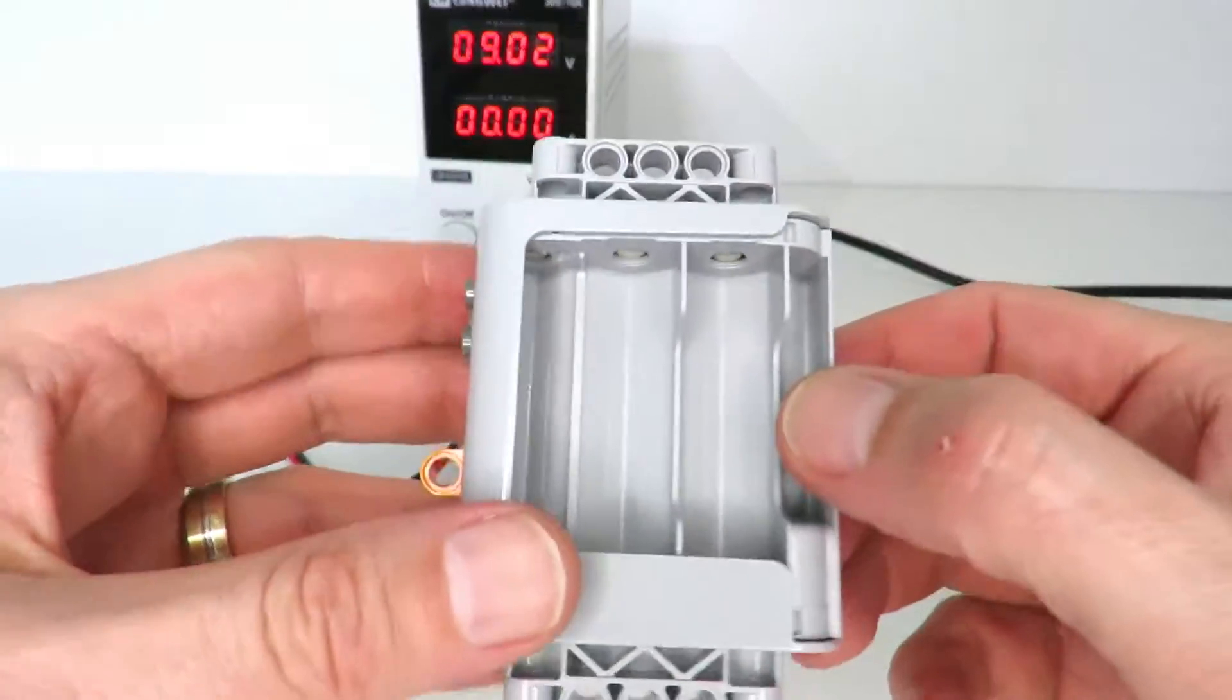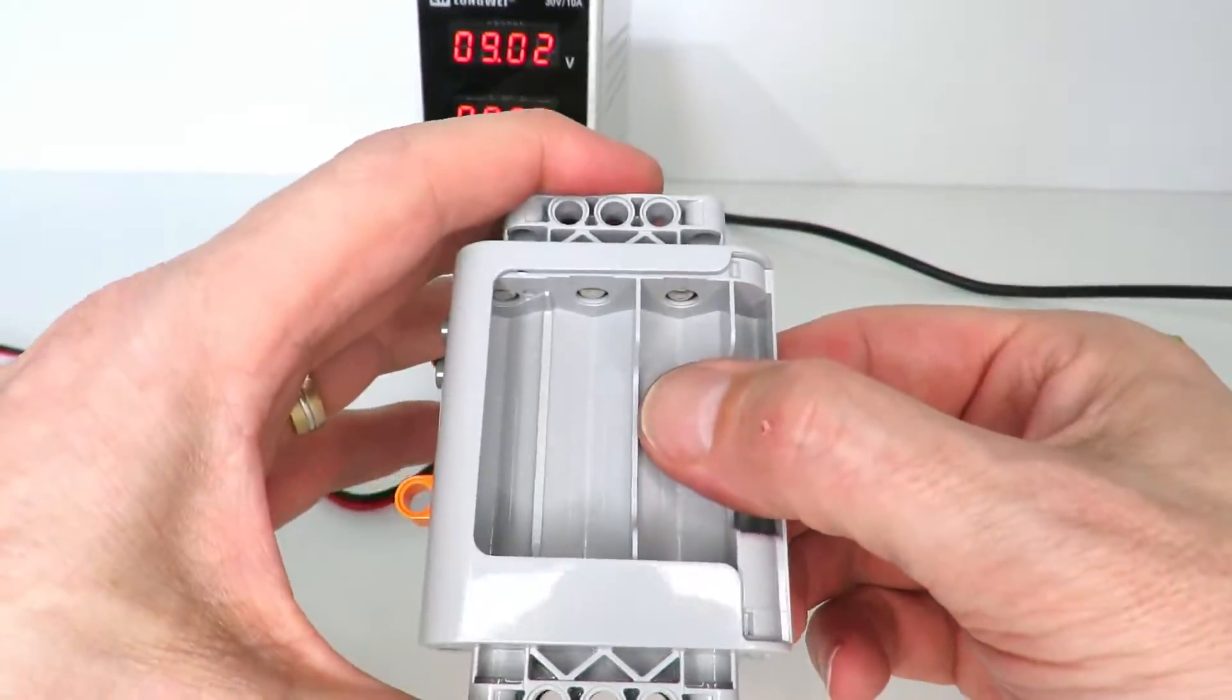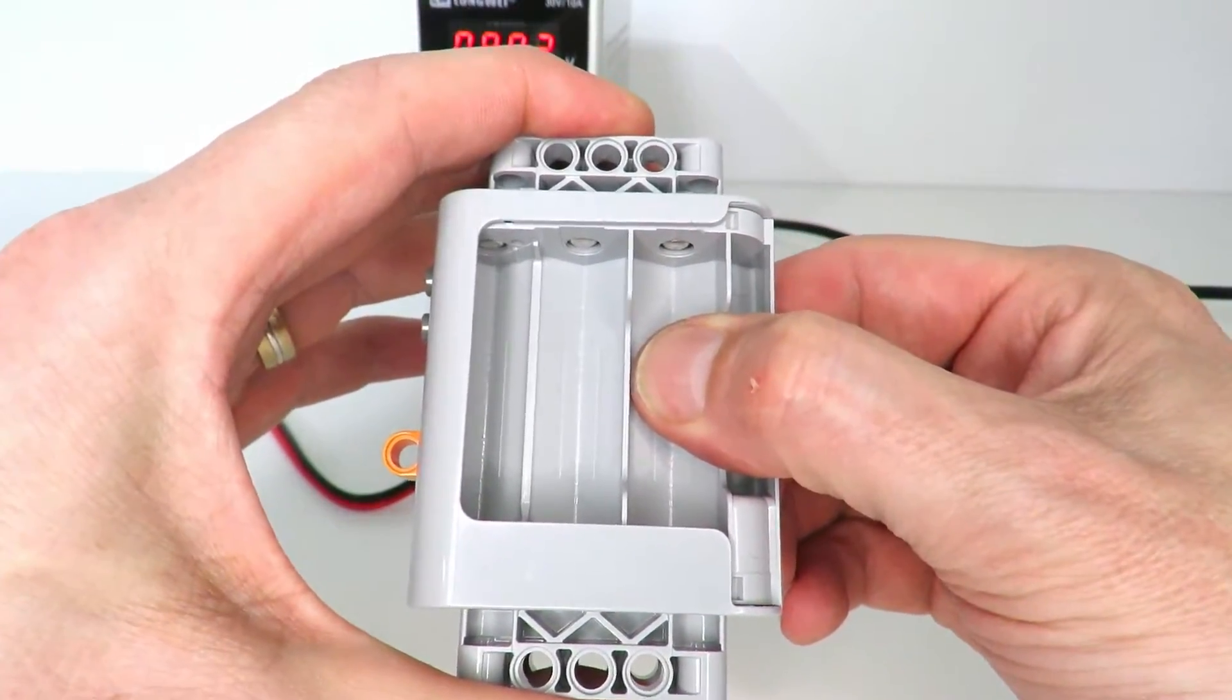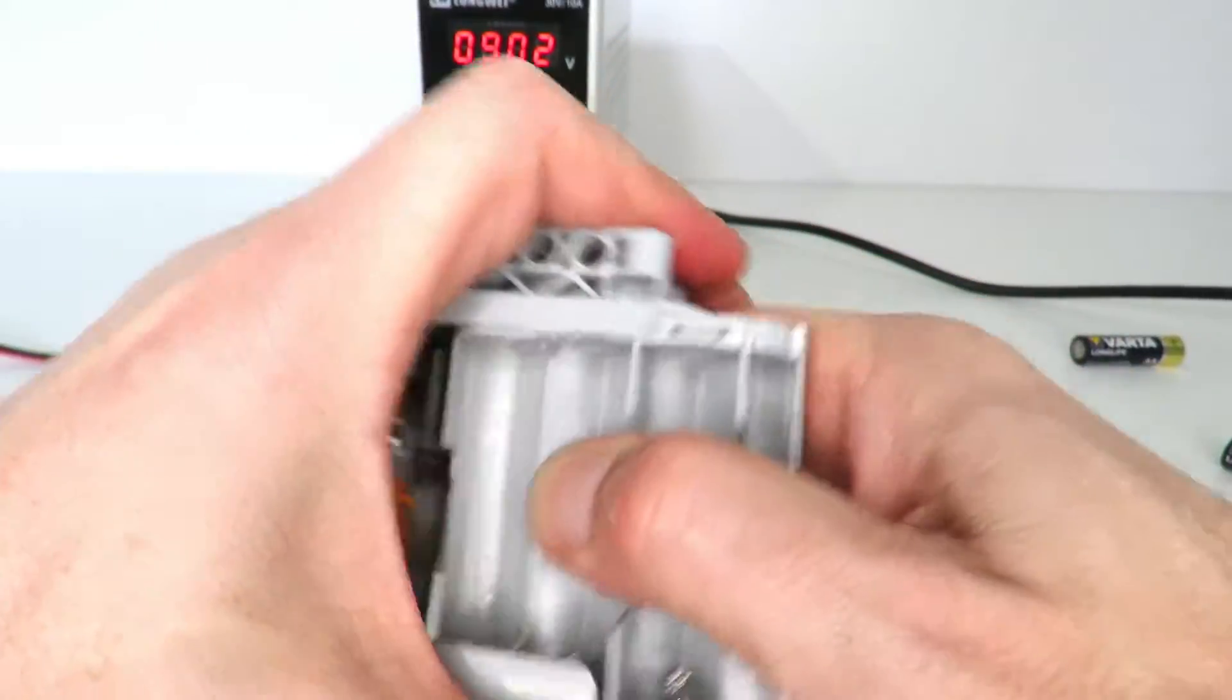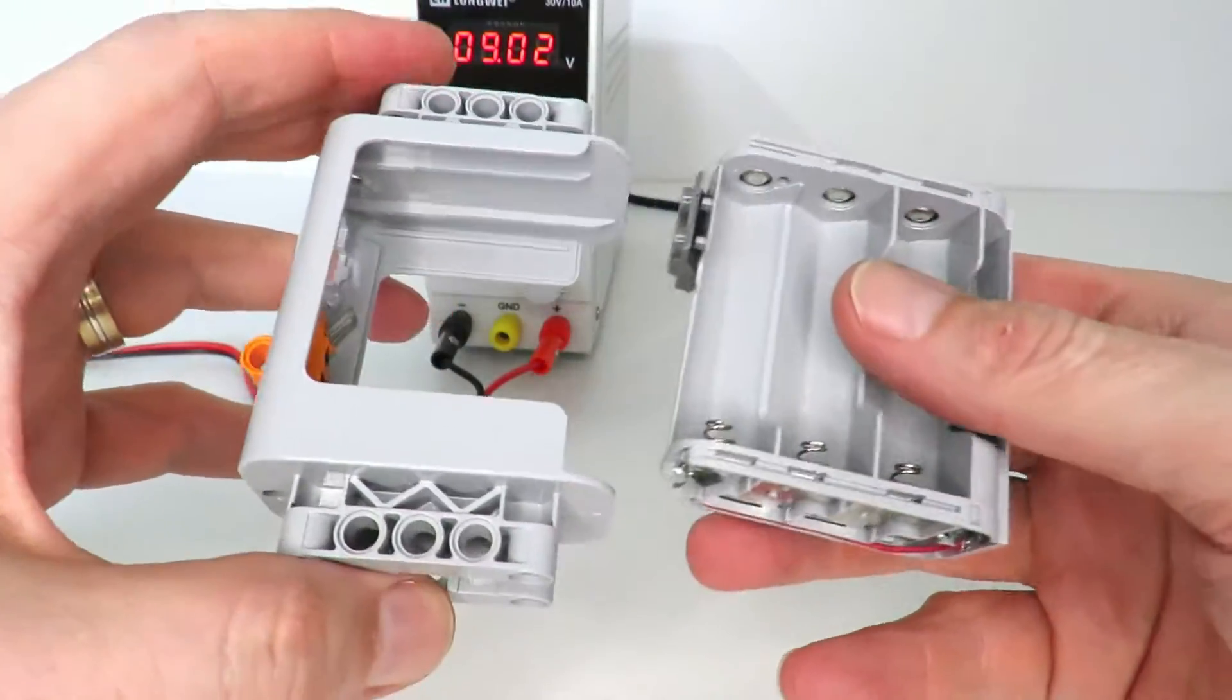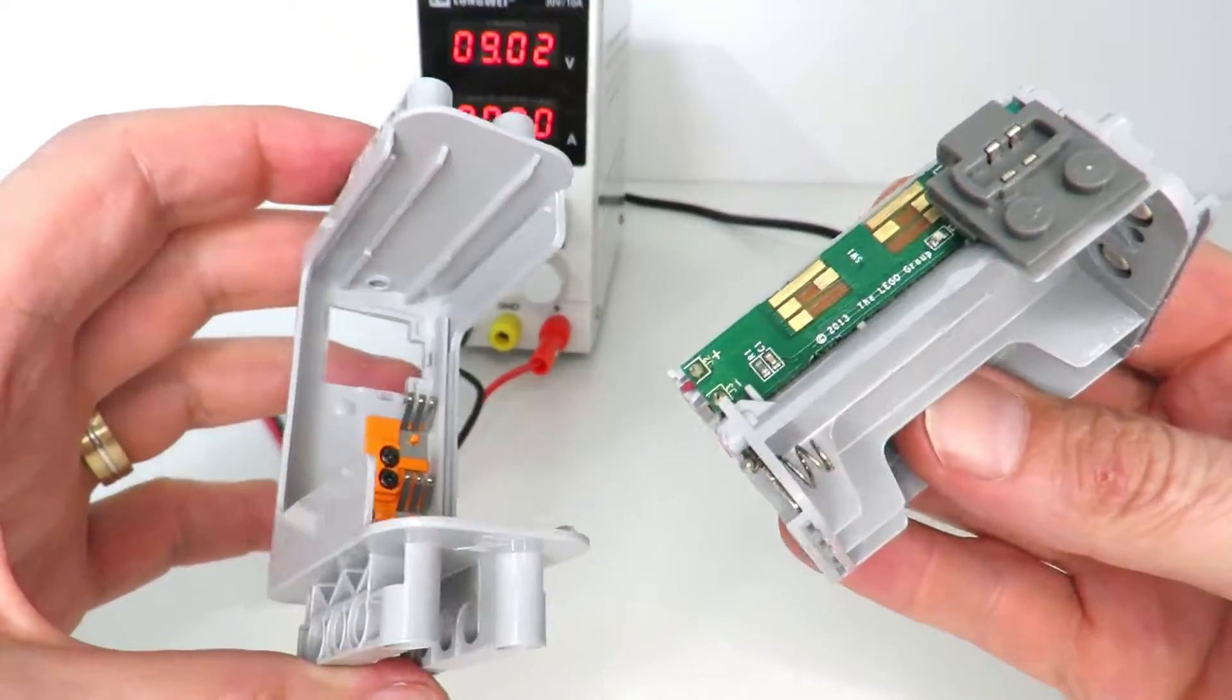Alright, now the trick is to be able to pull this apart. You need to be able to grip this here and grip this quite firmly. You can pull. Now you do have to pull quite hard and this will come out like that. There we go. So this is taking apart your battery pack into two components.